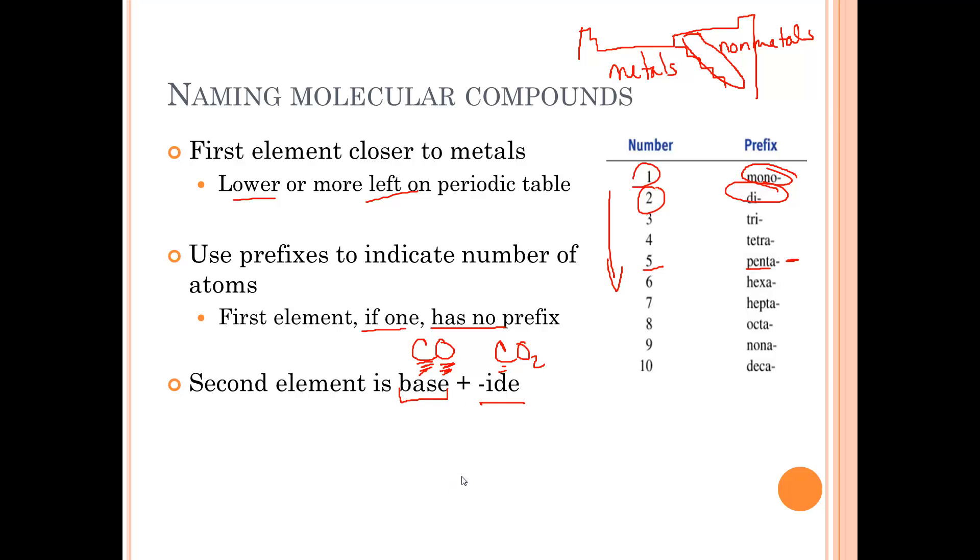So that's very similar to the ionic formulas. So if it was chlorine, you take the base of it and you chop off the rest and it becomes chloride.